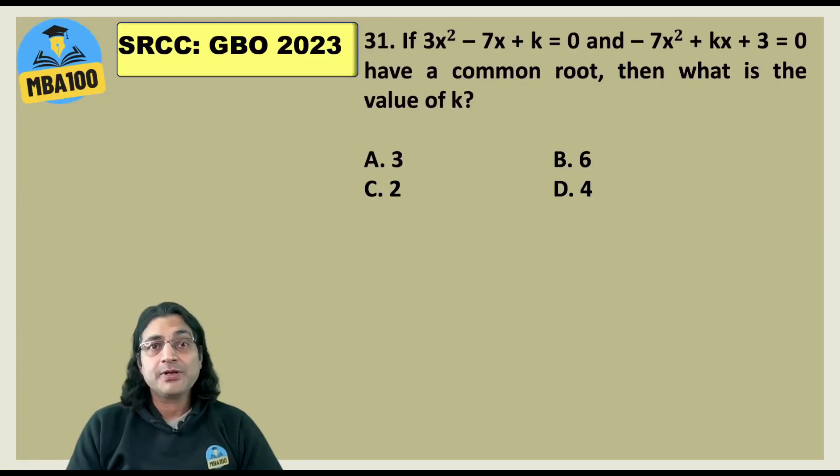Now here, those people who have been in practice, they are supposed to get it in 10 seconds. Well, I tell you why. Because in any quadratic equation, if sum of the coefficients is 0, it means x equal to 1 would certainly be one of the roots. Now here, it is very easy to discover that 3 minus 7 and 4. Similarly, minus 7, 4 and 3. So if you go for k equal to 4, sum of the coefficients in both the equations becomes 0. And hence, you will certainly get a common root that is x equal to 1. So of course, the answer is 4.